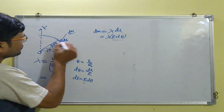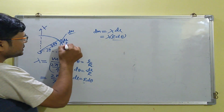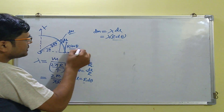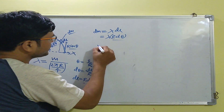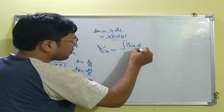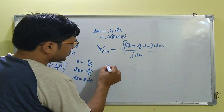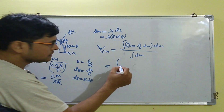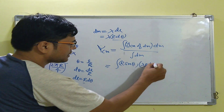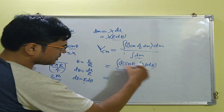Now we calculate the center of mass along the y-axis. This element is lying at a height of r·sinθ above the x-axis. By the definition of center of mass for a continuous body, y_cm = (∫ y·dm) / (∫ dm). Substituting, we get y_cm = ∫ r·sinθ · λ·r·dθ divided by total mass m, giving λr²/m · ∫ sinθ·dθ.